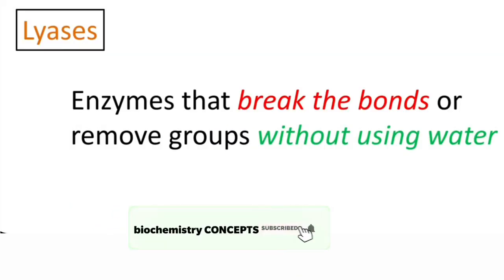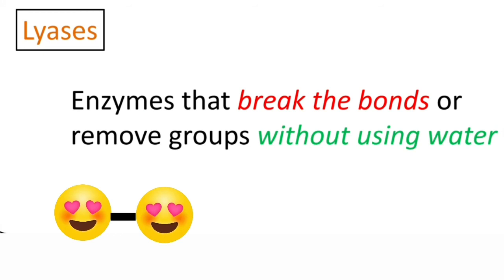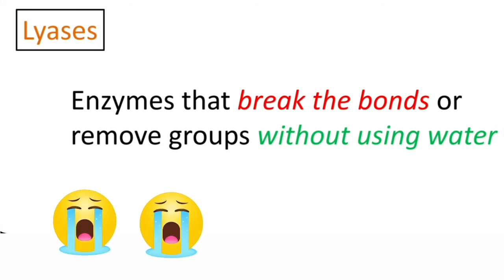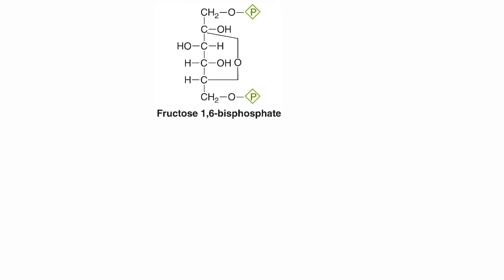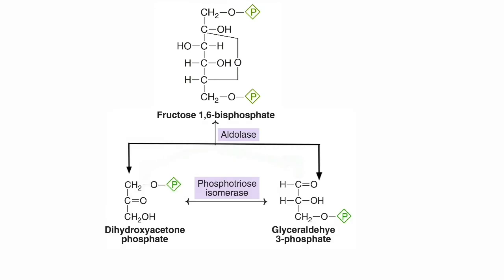Coming to the next class — lyases. These enzymes break bonds or remove groups without using water. The basic function of hydrolases and lyases is the same — breaking bonds — but hydrolases use a water molecule whereas lyases break bonds without water. An example is aldolase, which breaks fructose 1,6-bisphosphate into glyceraldehyde 3-phosphate and dihydroxyacetone phosphate — two 3-carbon compounds — without requiring any water molecule.